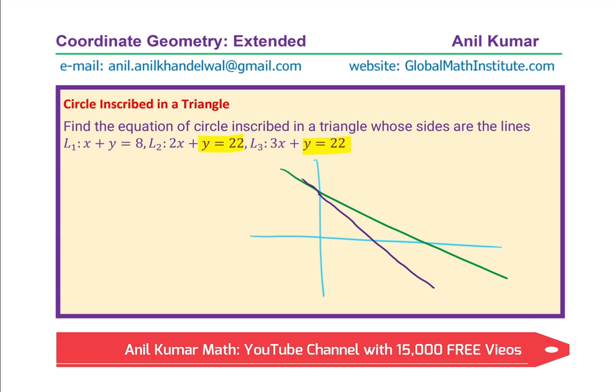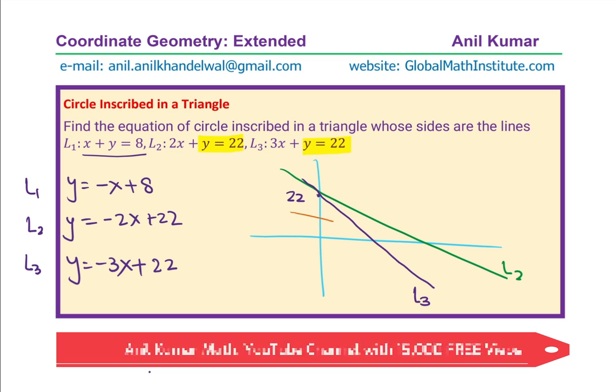Let me rearrange the lines. So, we have the equation x plus y equals to 8 which I can write y equals to minus x plus 8 and the other two lines we are writing y equals to minus 2x plus 22 and then we have y equals to minus 3x plus 22. This point here is 22 for sure and this line is our line L3.